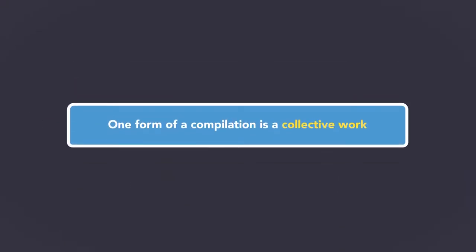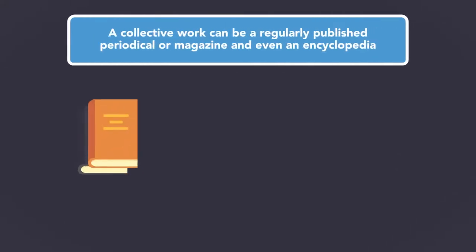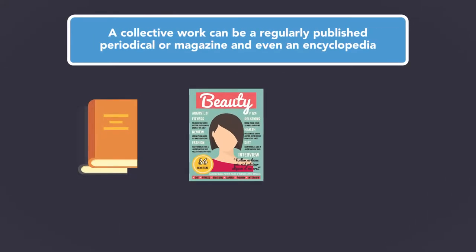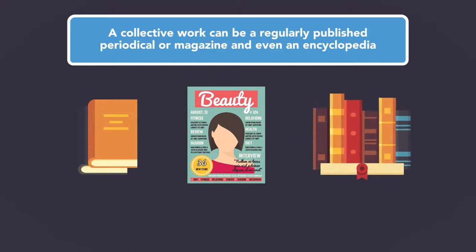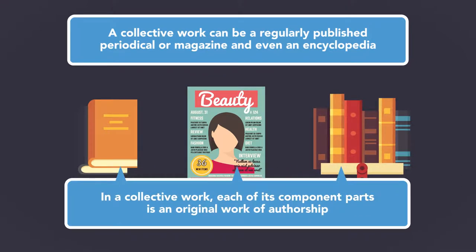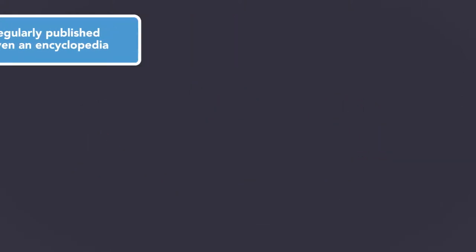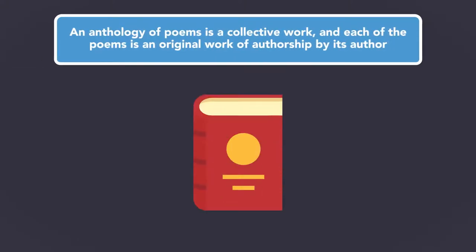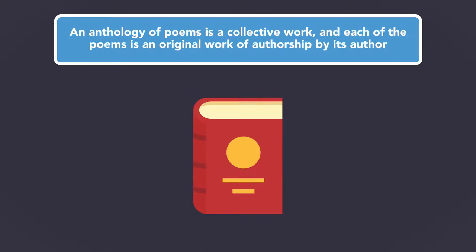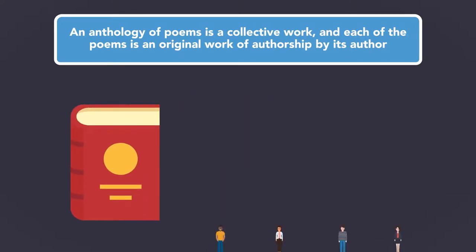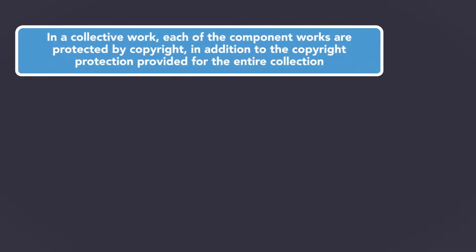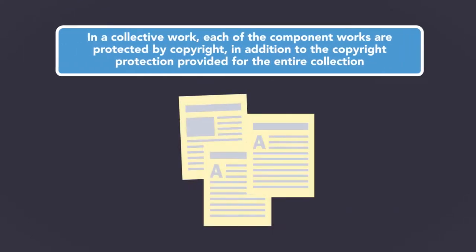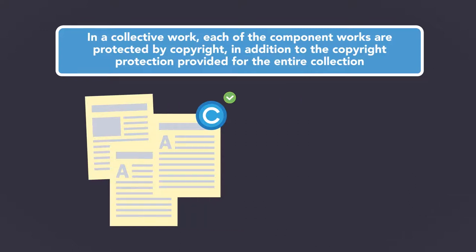One form of a compilation is a collective work. A collective work can be a regularly published periodical or magazine and even an encyclopedia. In a collective work, each of its component parts is an original work of authorship. For example, an anthology of poems is a collective work, and each of the poems is an original work of authorship by its author. In a collective work, each of the component works are protected by copyright, in addition to the copyright protection provided for the entire collection.